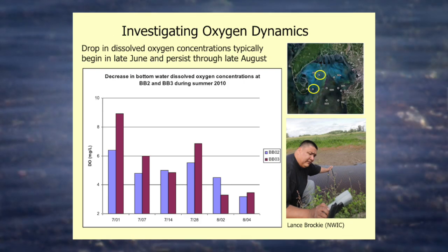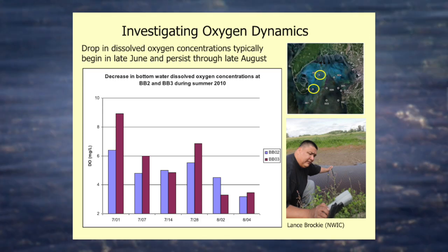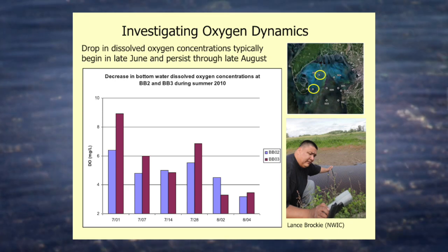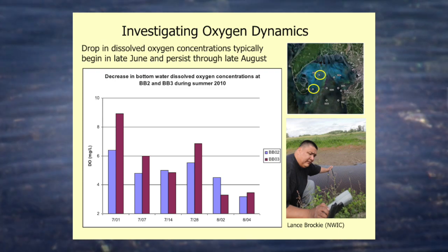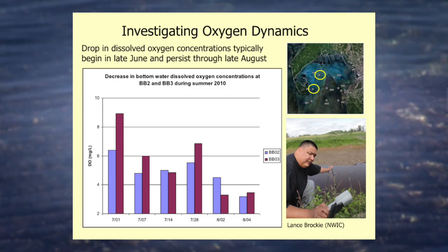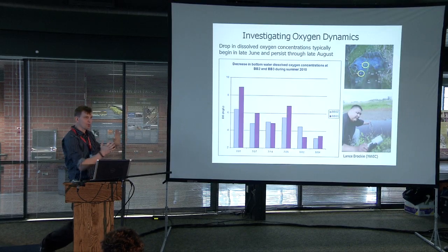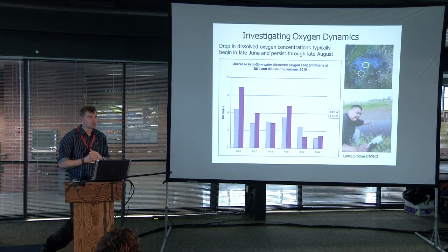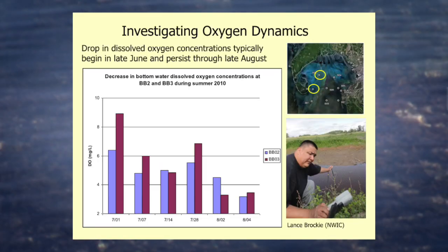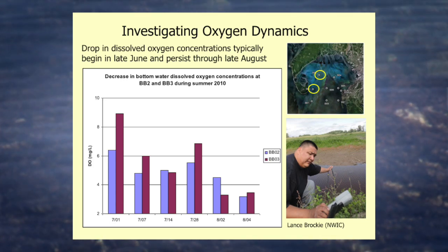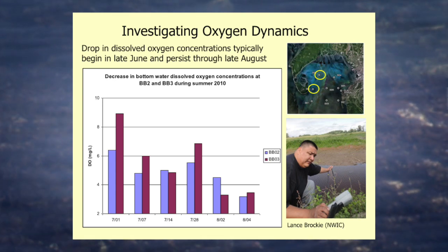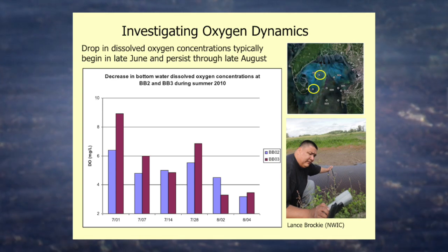Our first question was: what are the dynamics of low dissolved oxygen in Bellingham Bay? A couple of years later, Lance Brockie, a student from Northwest Indian College, worked with me to monitor specific sites in the center of Bellingham Bay, tracking dissolved oxygen concentrations at the bottom. If you start in July and move through the summer, what we've characteristically seen is a predictable decline in dissolved oxygen concentrations from July into August and September. This pattern — organic matter loading, algal productivity increasing, material sinking and decomposing — is pretty predictable in Bellingham Bay.